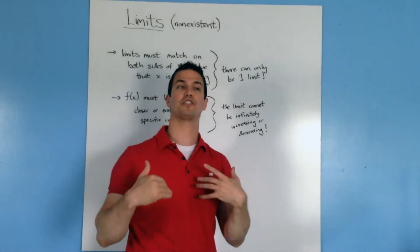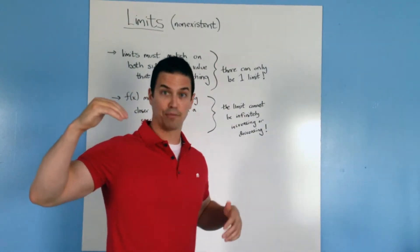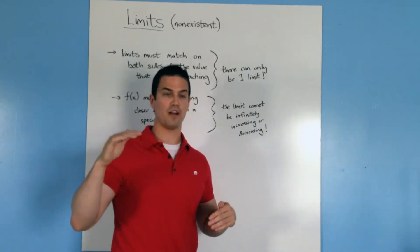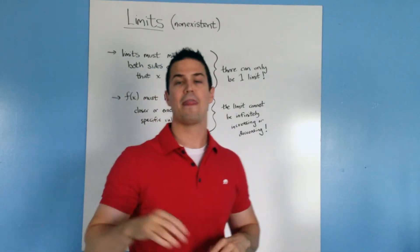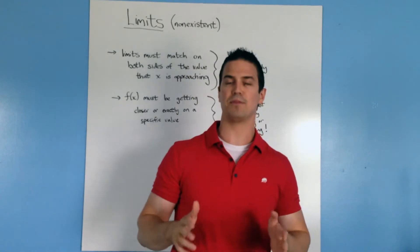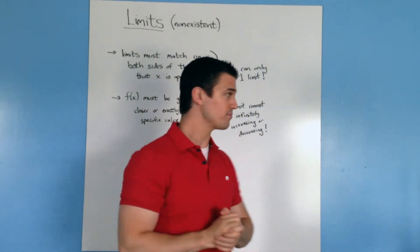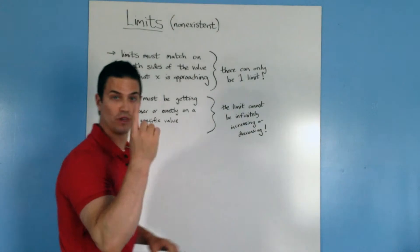Okay, so if you look at a function and on one side of the value that it's approaching it approaches some other number compared to the other side, then simply the limit does not exist. That's the first one, you can only have one limit.